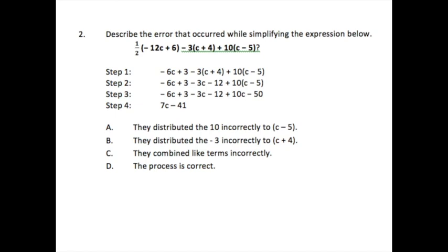For our next problem, we have basically the same idea. But now we have to describe exactly what is the actual error. So we're going to start the same way. We distribute the one-half, we find the negative 6C, distribute here the one-half, we have a 3. If you notice, this is basically the same problem that we had before.